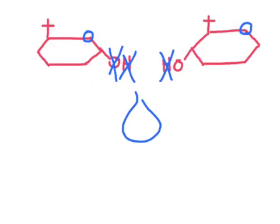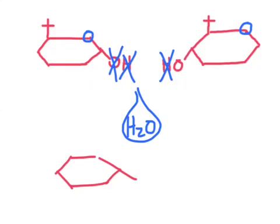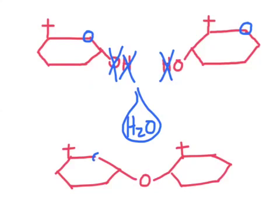Through dehydration synthesis we take away H2O — there is the water drop that I removed. The end result is a dimer, which is a simple carbohydrate: two rings joined together by a common oxygen atom. And that's all there is to it — dehydration synthesis to create a polymer from two monomers.